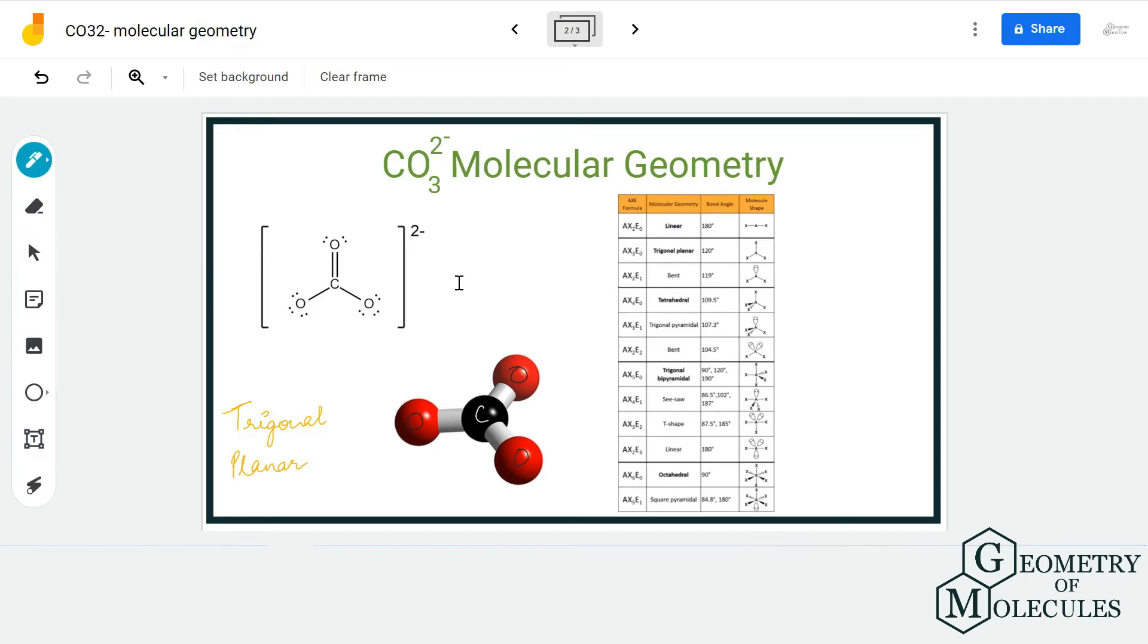These are between bonding pairs of electrons and non-bonding pairs of electrons. Here we do not have any lone pairs of electrons, but we do have bonding pairs of electrons as carbon is forming bonds with all three oxygen atoms.